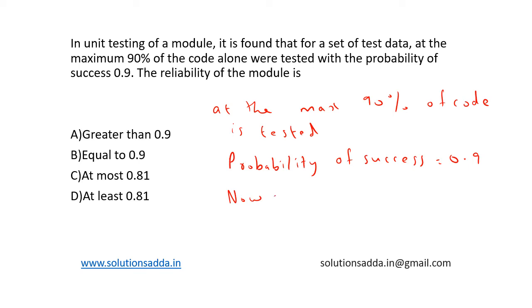Now, reliability equals 0.9 times 0.9. This 90 percentage is converted into 0.9 here, and this is the probability of success.